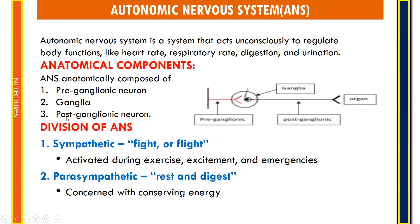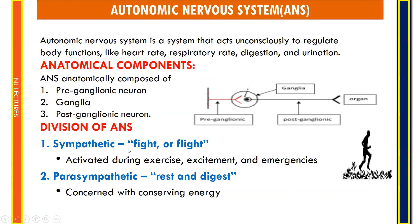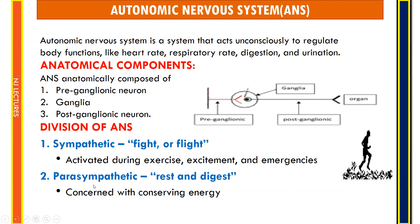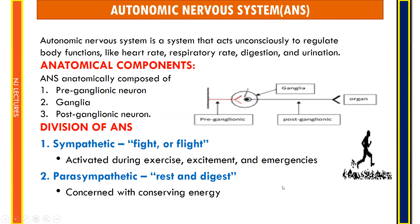The ANS is divided into two. The first is the sympathetic nervous system, also called fight or flight, because it is activated during exercise, excitement, and emergency situations. The second division is the parasympathetic division, also called rest and digest, which is mainly concerned with conserving and restoring body energy and replenishing nutrient stores.